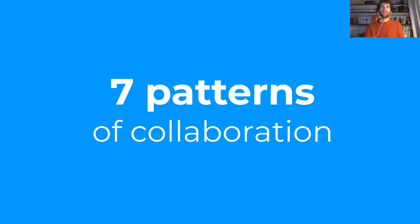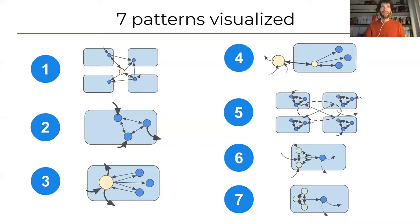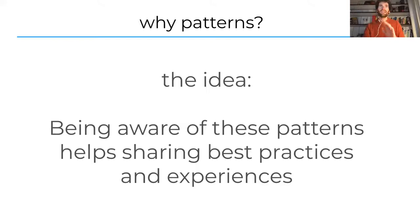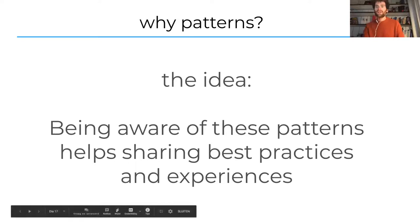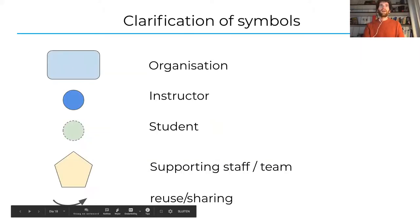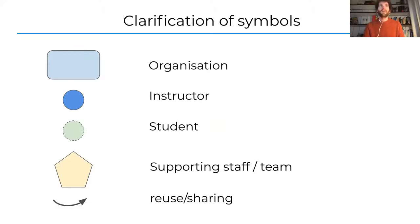It's those organizations and their experiences I'd like to focus on, summarized into seven patterns. Being aware of these patterns will hopefully help share best practices and experiences between organizations. Here's a clarification of the symbols: a square is an organization, a blue circle an instructor, a green dotted circle a student, a hexagon a supporting staff or team, and arrows represent either reuse or publishing of exercises.